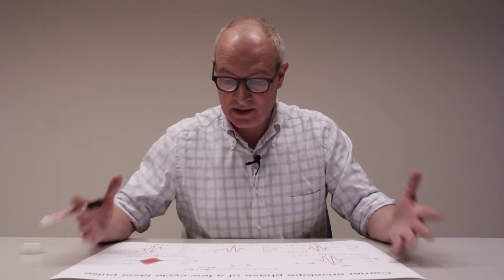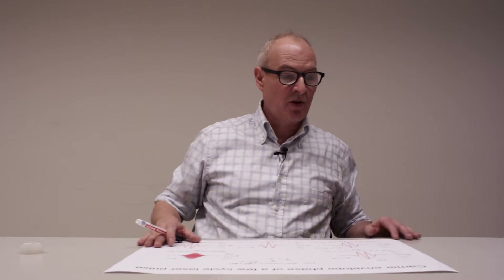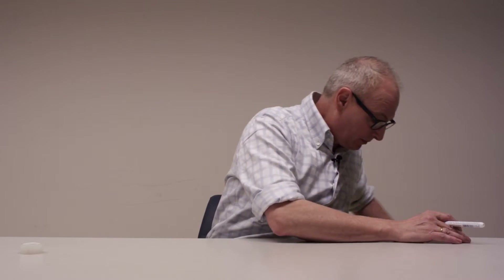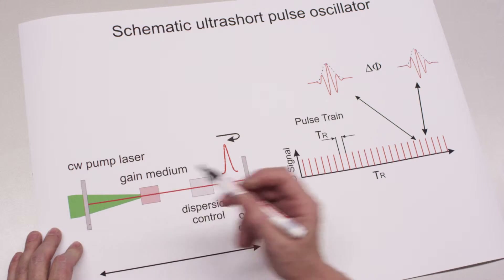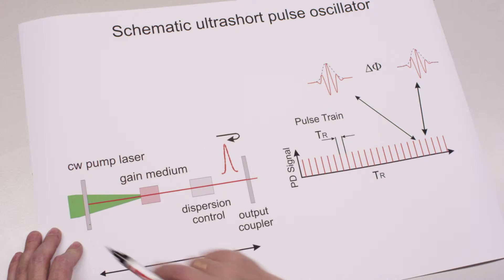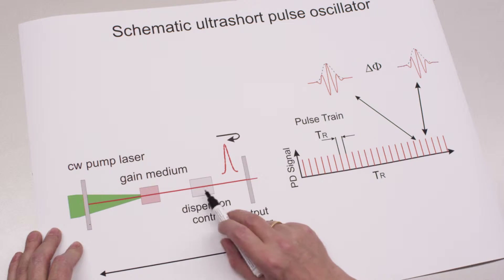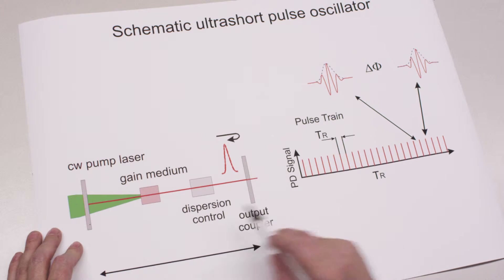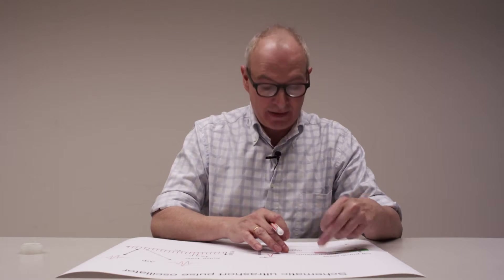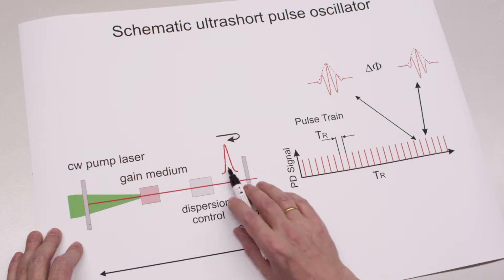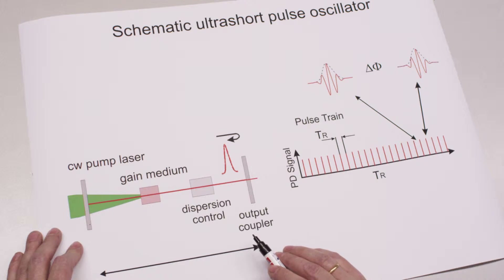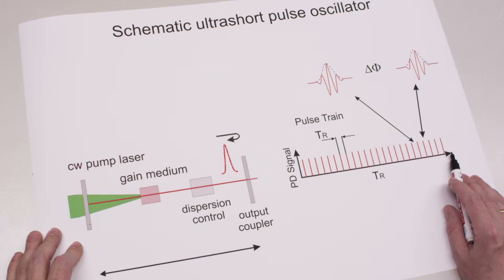The next question is where this phase comes from in a real oscillator. We look into a mode-locked oscillator cavity. Here is a simple schematic: we have an end mirror, the output coupler, the gain medium pumped by a CW source, and a dispersion control. The dispersion control compensates the positive dispersion introduced by the gain medium. When the settings are correct, the oscillator starts to mode-lock, and the pulse propagates back and forth. Placing a photodiode at the output coupler, we see a regular series of pulses — the pulse train.